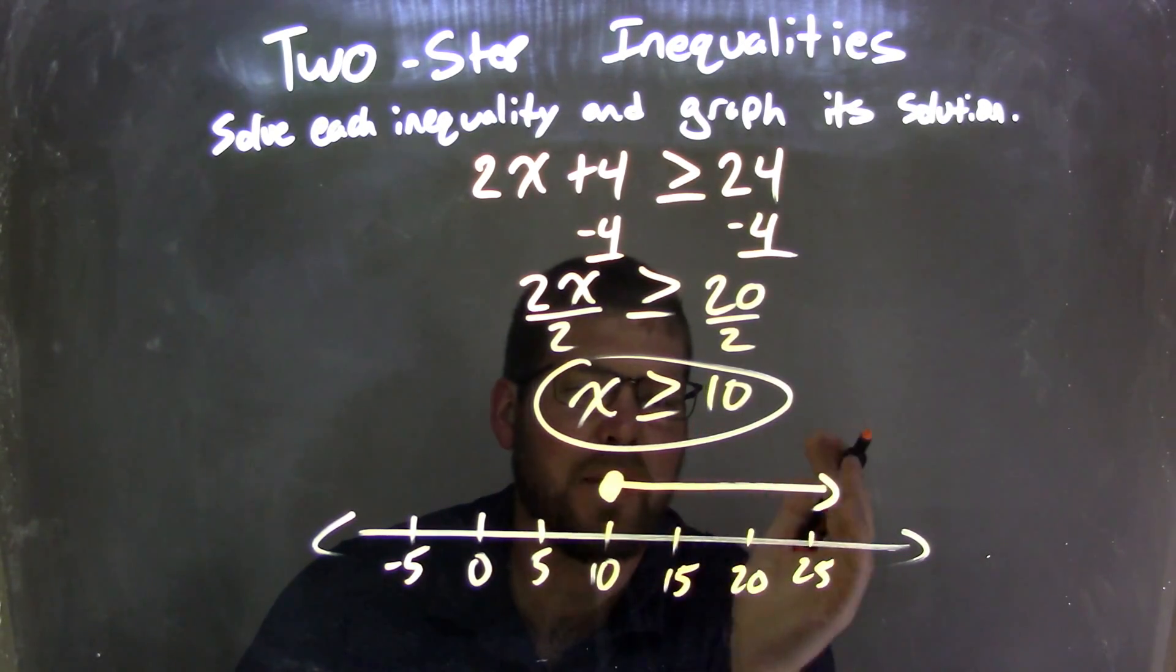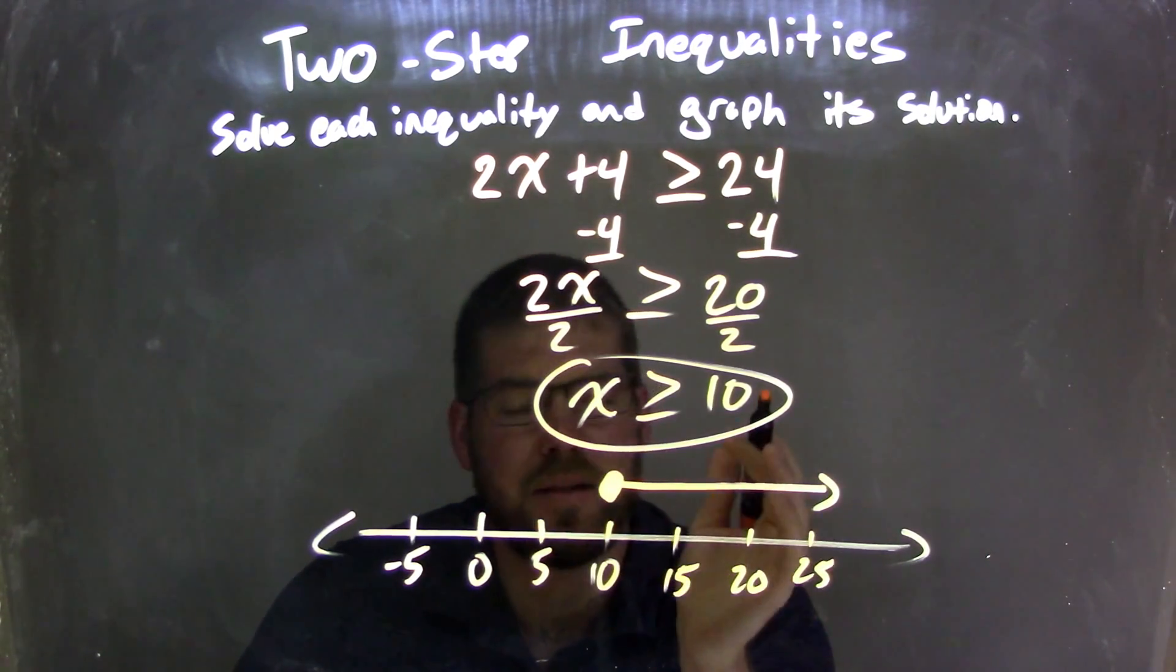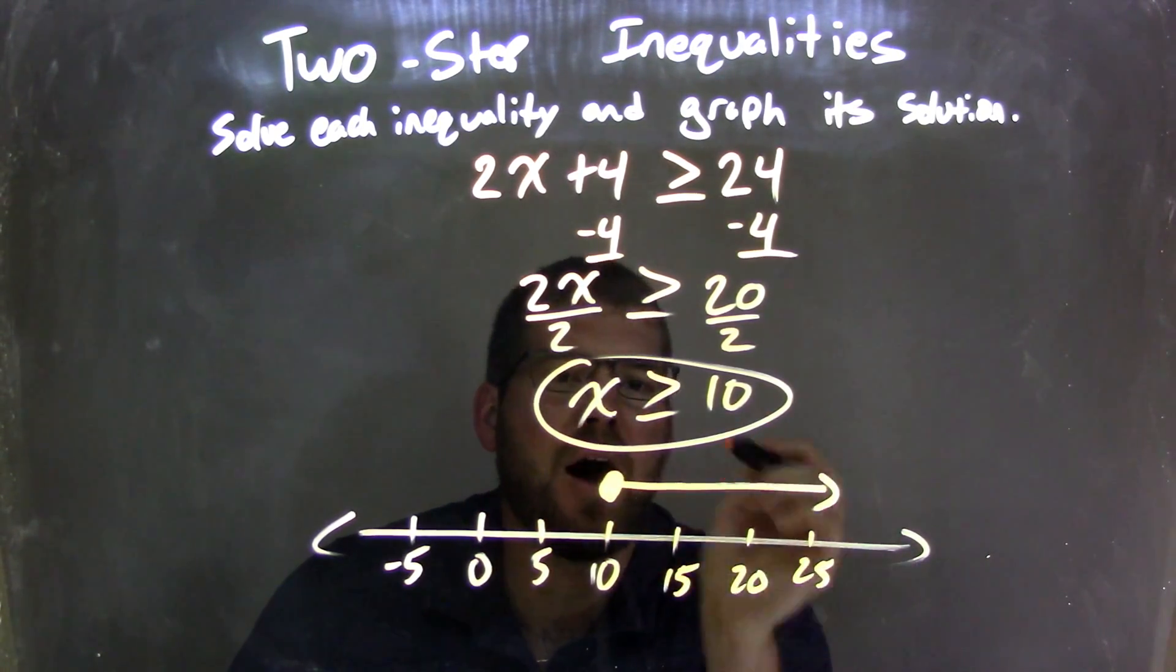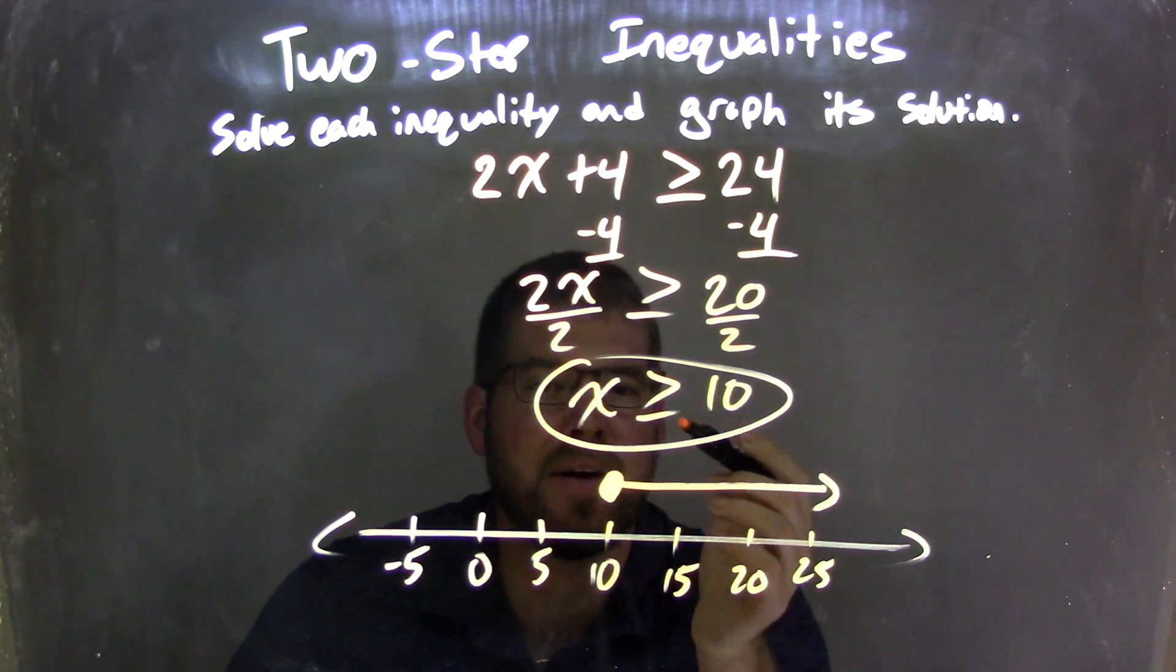And so now this graph on the number line represents and matches up with our final answer, which is x is greater than or equal to 10.